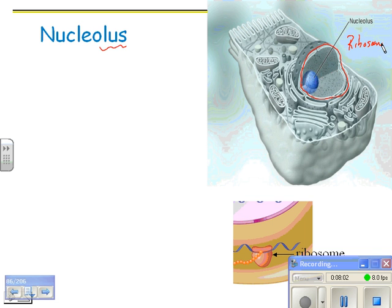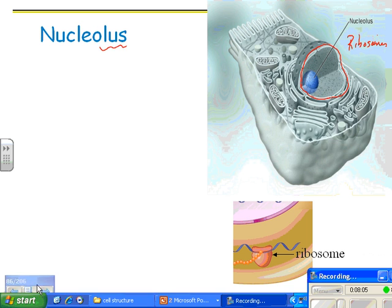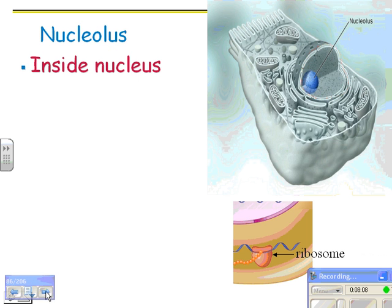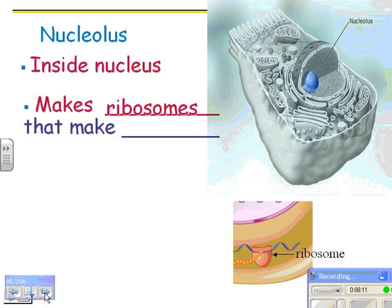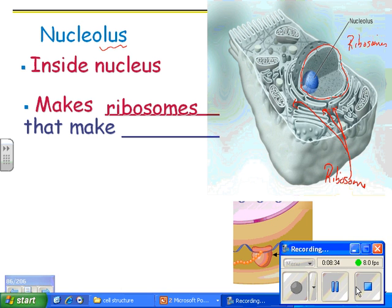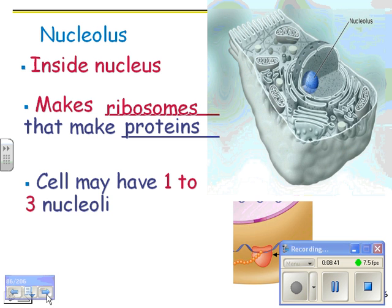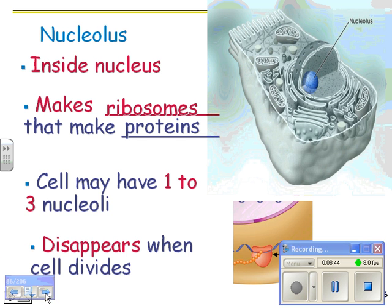The nucleolus is inside the nucleus and it makes ribosomes. Those little dots you see are ribosomes. Ribosomes make proteins. A cell can have one to three nucleoli, and the nucleolus disappears when the cell divides. You don't need to make ribosomes when the cell is dividing — all you have to do is separate your DNA very carefully.